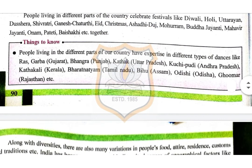Children, things to know: people living in different parts of our country have expertise in different types of dances like Raas Garba from Gujarat, Bhangra from Punjab, Kathak from Uttar Pradesh, Kuchipudi from Andhra Pradesh, Kathakali from Kerala, Bharatanatyam from Tamil Nadu, Bihu from Assam, Odissi from Odisha, Ghumar from Rajasthan etc.